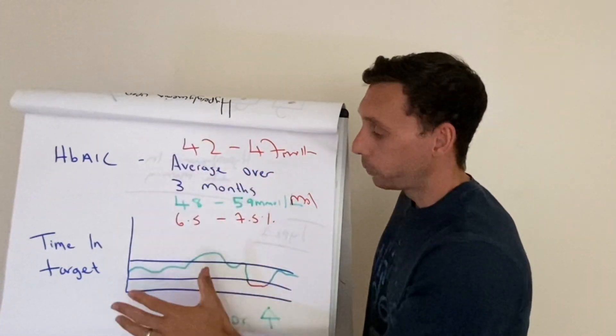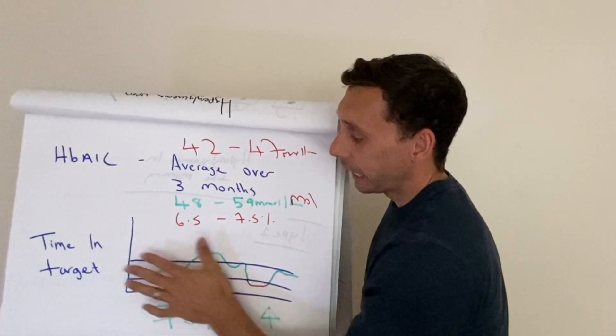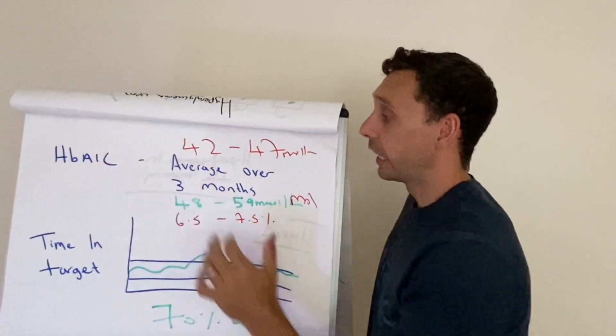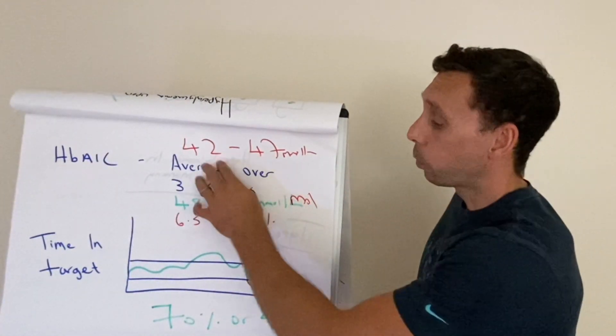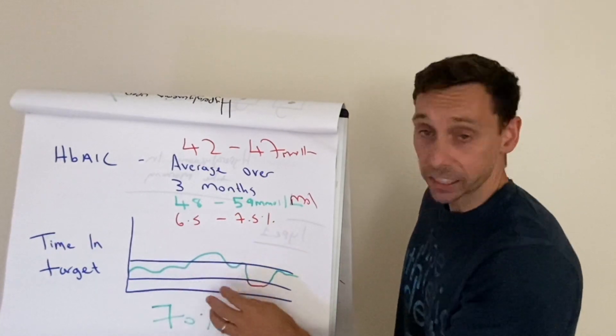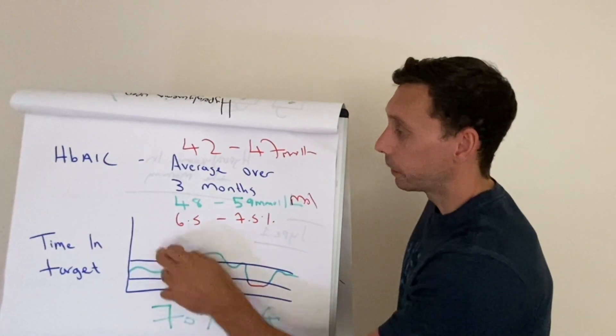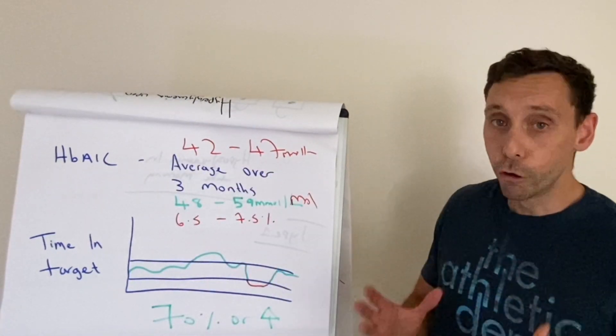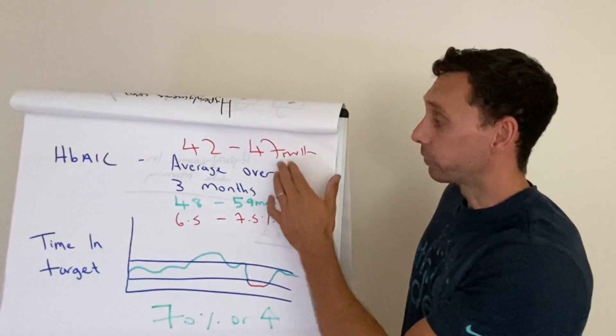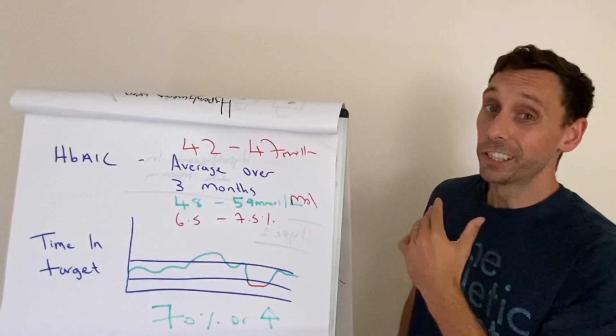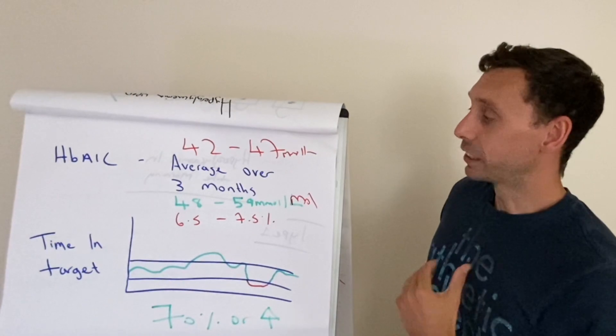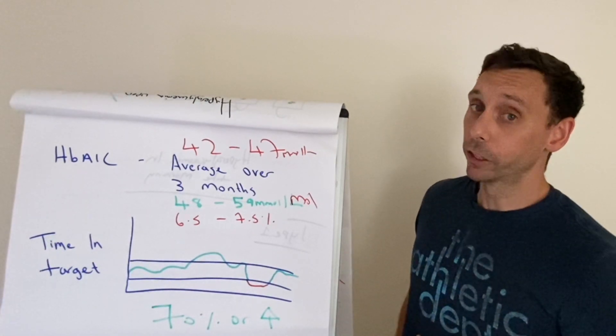But for a lot of people, this hasn't entered their stratosphere yet. So they're still with the HbA1c, which is still a valuable test, but it's not quite as targeted and maybe as valuable as the time in target, but still a good overall measurement. If someone has a very high HbA1c, chances are that's going to be accurate. So it still gives us a pretty good idea of how well that person is being controlled.